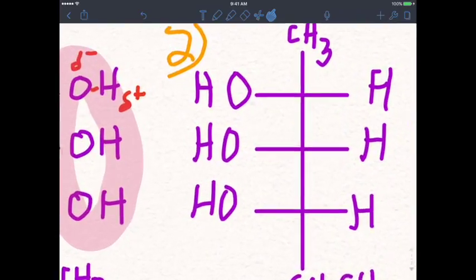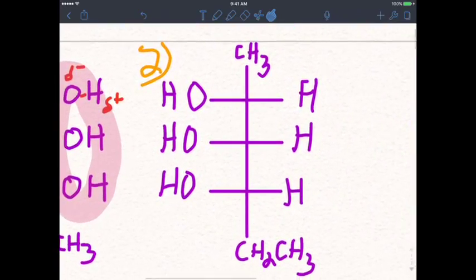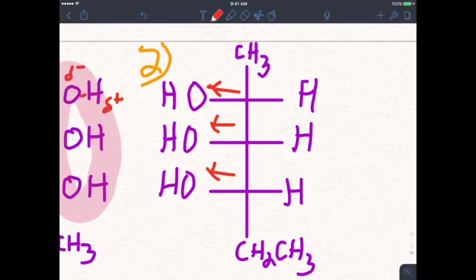Now with enantiomers, what we've learned is that they have the same physical properties. The reason for that is when you have the mirror image, you still have the same dipole moments, just in the other direction, but they're still all pointing in the same direction.